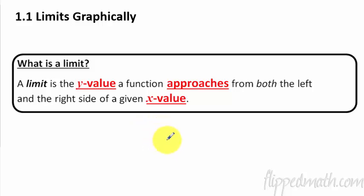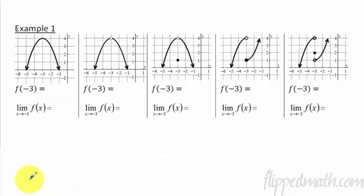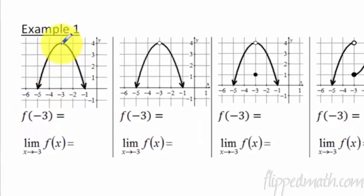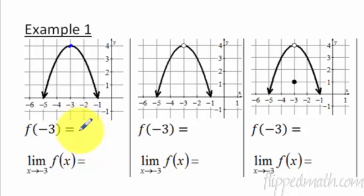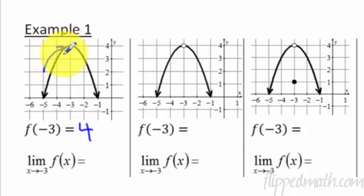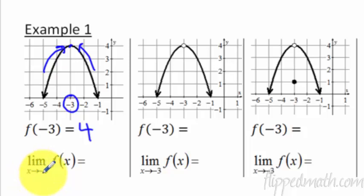Get that down in your notes — pause here if you don't have that written down yet. Let's talk about the limit. If x is negative 3, then the y value is up here at 4. So if x equals negative 3, then the y value is 4. For the limit, you're going to draw arrows approaching from both the left and the right side of this x value, negative 3. As x approaches negative 3 from the left side and from the right side, the y value is 4.